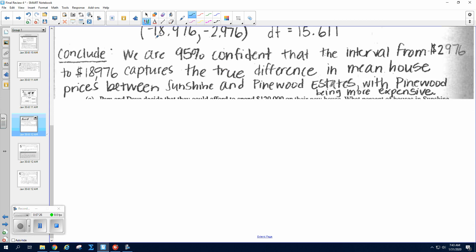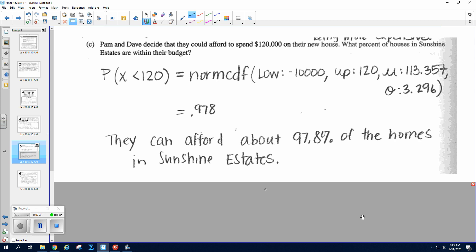Okay, so they're allowed to spend $120,000 on their new house. What percent of houses are within their budget? So the main thing here is making sure you make this 120, either that or you need to make both of these in the thousands. Okay, so we are assuming normality, so I can go from negative a big number to 120, mean of 113.357, standard deviation of 3.296. These come from the Sunshine Estates data, and they can afford about 97.8% of the homes.